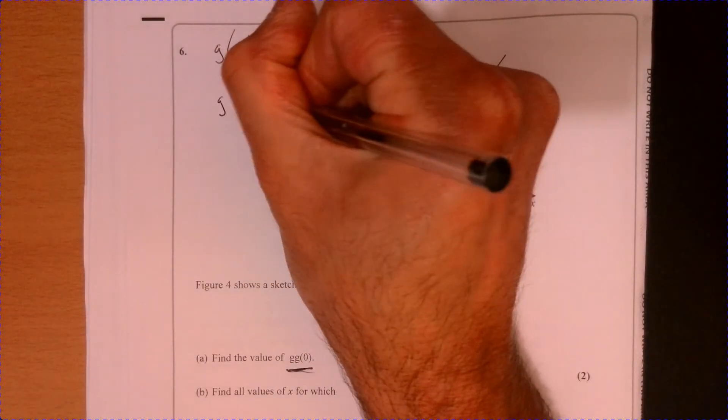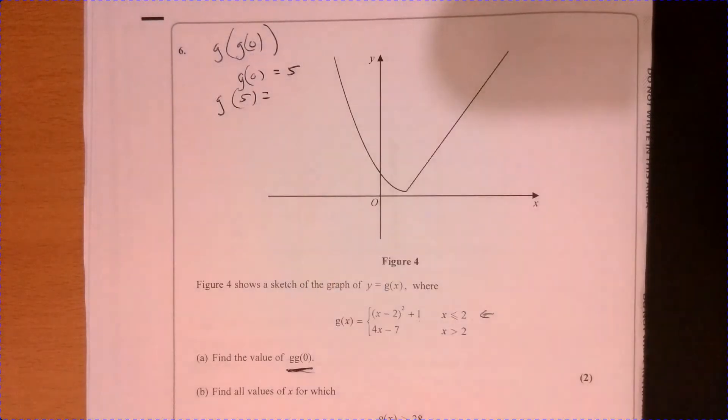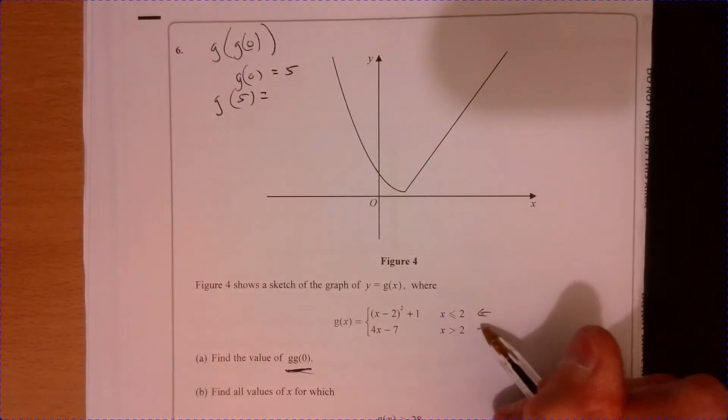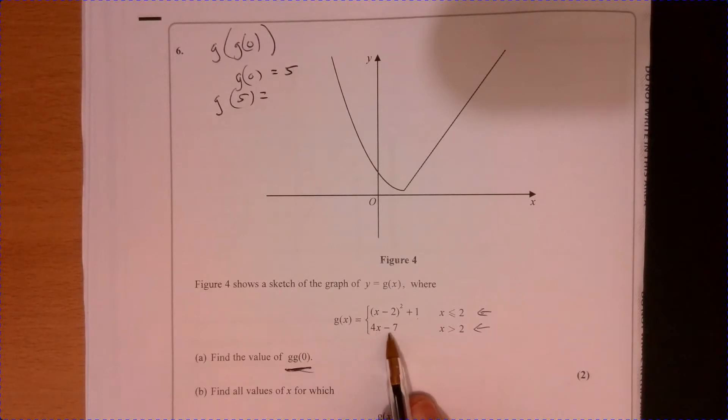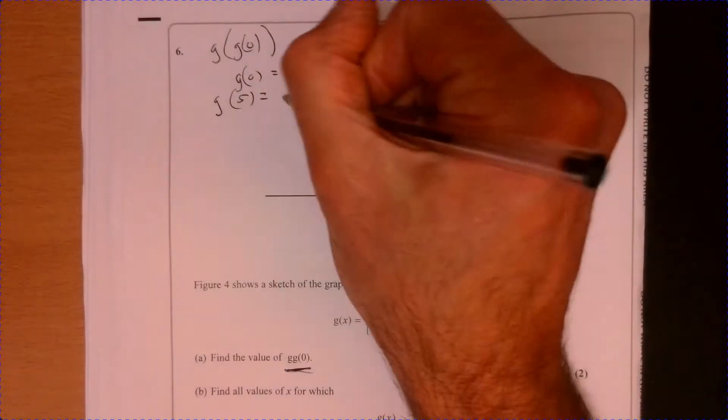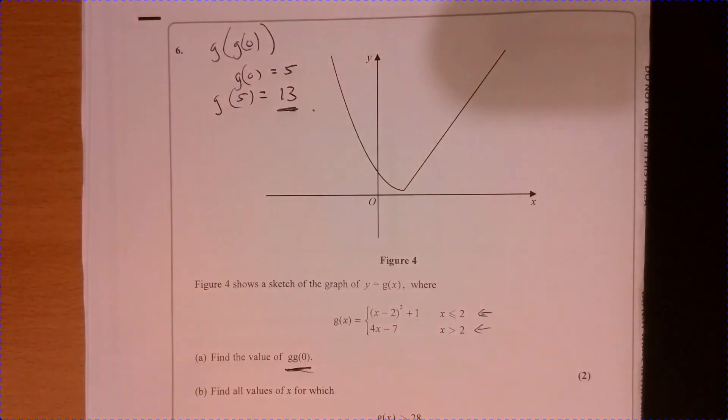And then we've got to work out g(5). So that means we're looking at this one. So four times five take away seven, so that's going to equal 13. All right, so there we go. We've got part A.